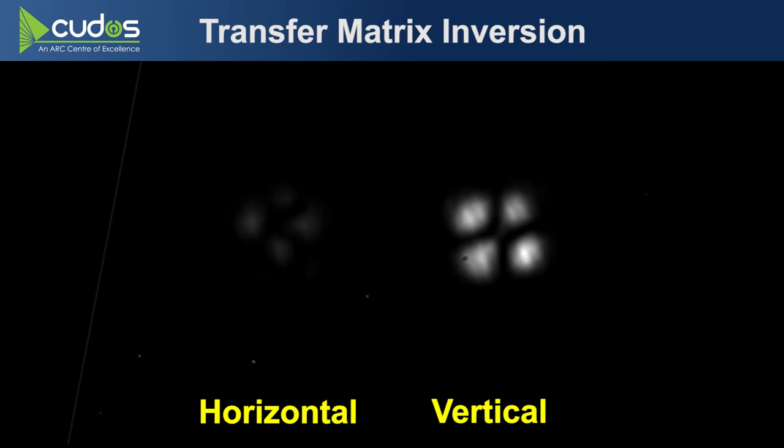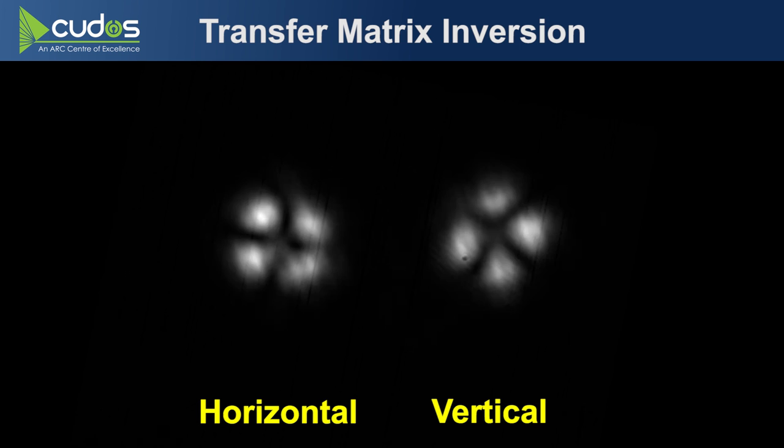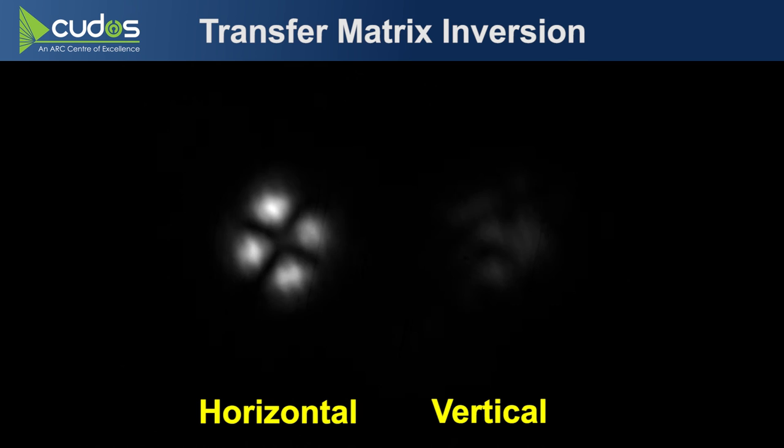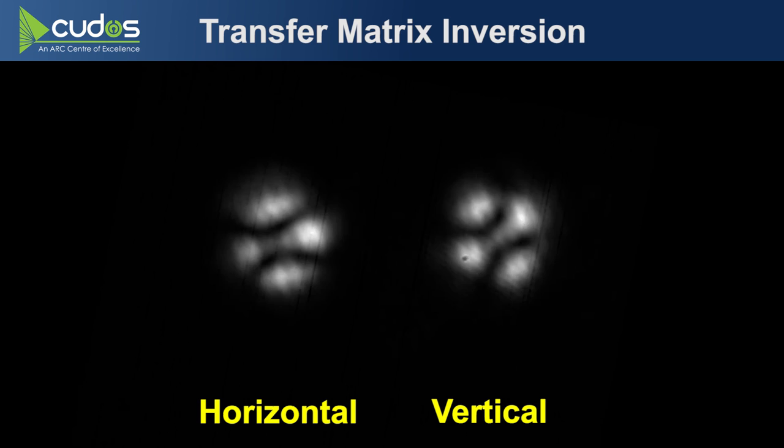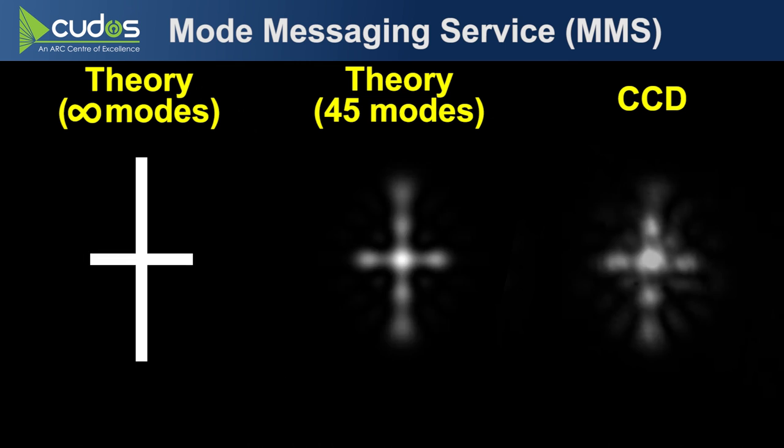And here's another demonstration where it's actually spinning LP 2,1 modes through 17.6 kilometers of fiber. Typically most multimode imaging demonstrations have been done through sort of like one to ten meter length of fiber. So this is the longest optical mode transfer matrix inversion by probably like three orders of magnitude, I guess.